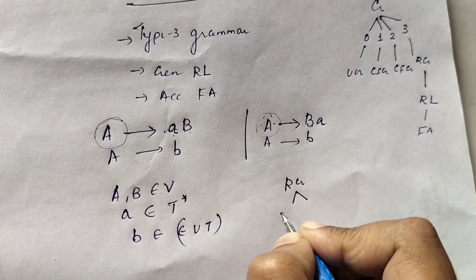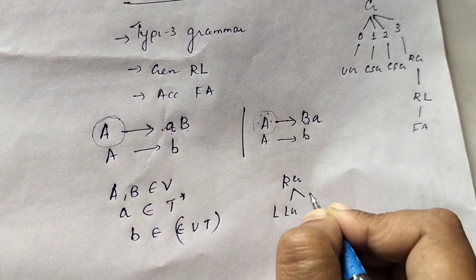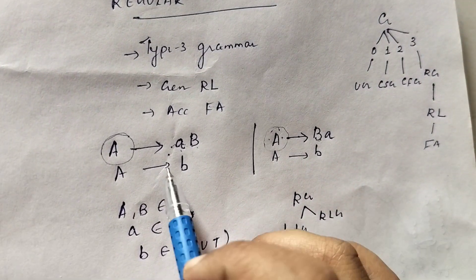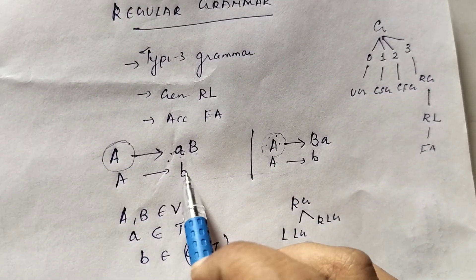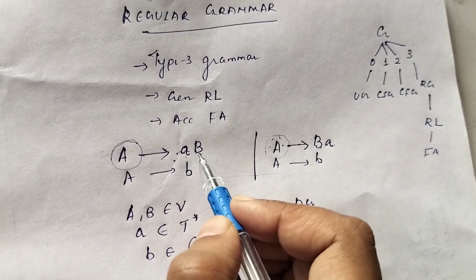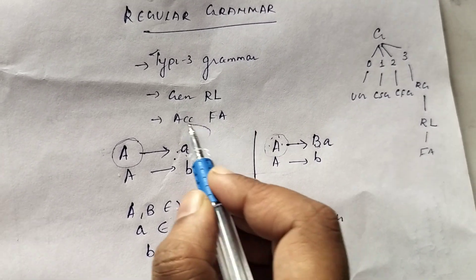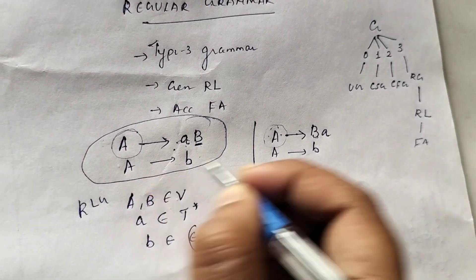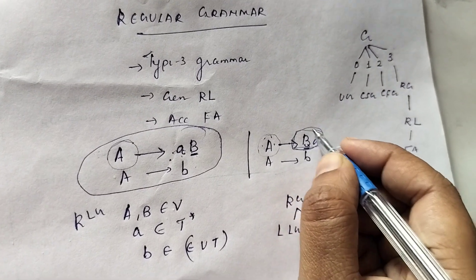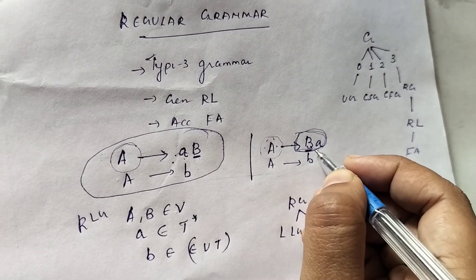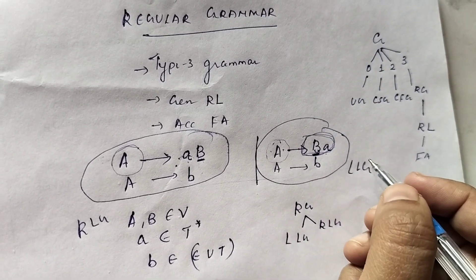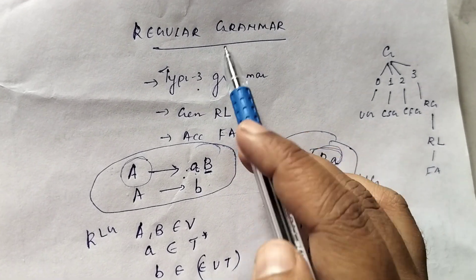Regular grammar is divided into two types: left linear grammar and right linear grammar. If in the RHS part the non-terminal appears on the right side, it is a right linear grammar. If in the RHS part the non-terminal appears on the left side (non-terminal then terminal), it is a left linear grammar. The languages generated by type 3 grammar are regular languages, for which finite automata is designed.